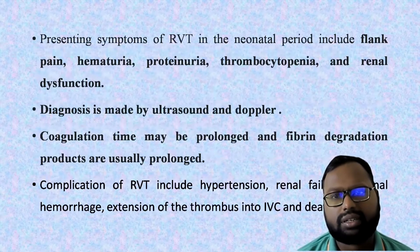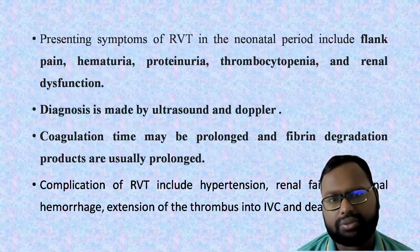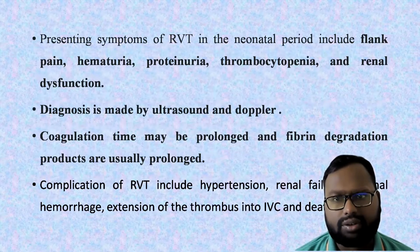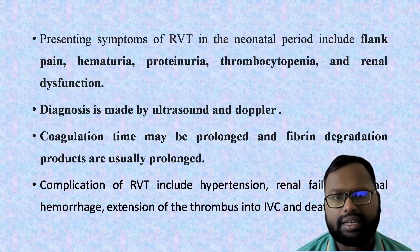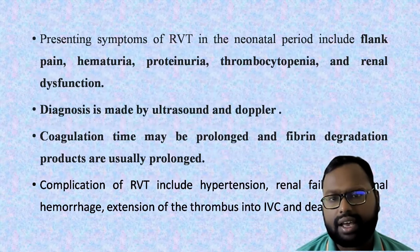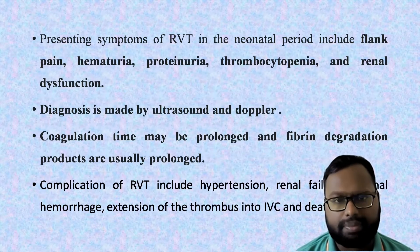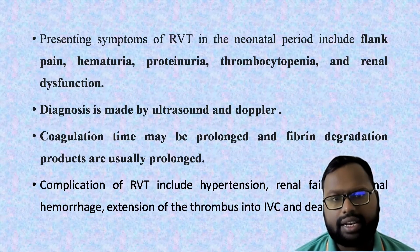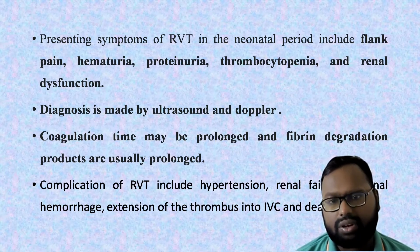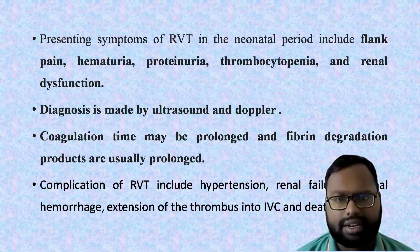The most common presentation includes flank pain, flank mass, and hematuria, along with proteinuria, thrombocytopenia, and renal dysfunction. Diagnosis is usually made by ultrasonography and color Doppler. Blood coagulation profile — PT/APTT is prolonged and FDP (fibrin degradation products) are also increased.